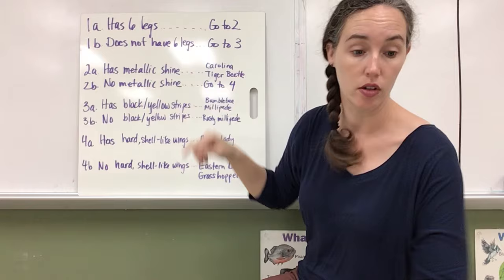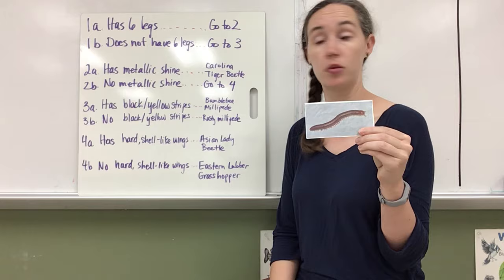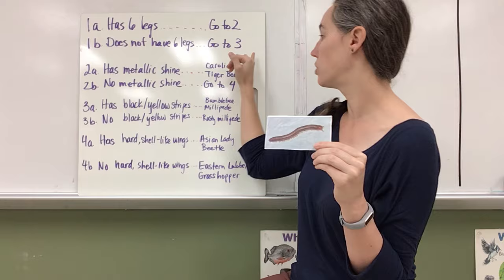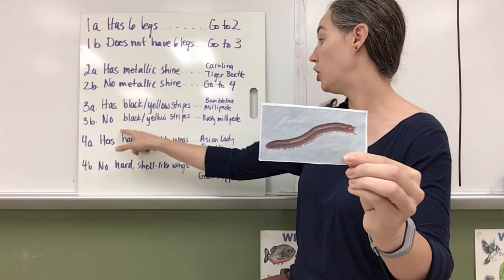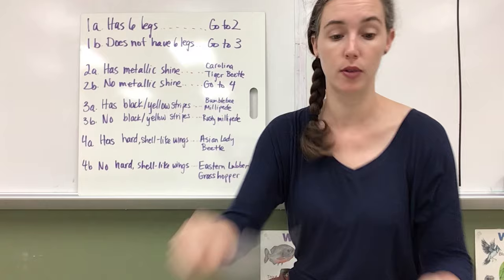So let's use this one. Let's imagine that we don't know what this is. Does it have six legs? Okay, does not have six legs. I'll go to three. Has black and yellow stripes? Nope. No black and yellow stripes. Ah, so this is a rusty millipede. So my key worked to identify this one.